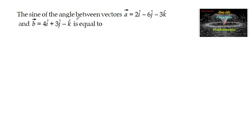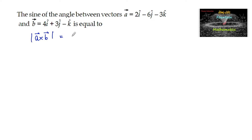Find the sine of the angle between the vectors a = 2i − 6j − 3k and b = 4i + 3j − k. Since we know that the cross product of two vectors and their magnitude is |a||b| sin θ, where θ is the angle between the two vectors a and b.